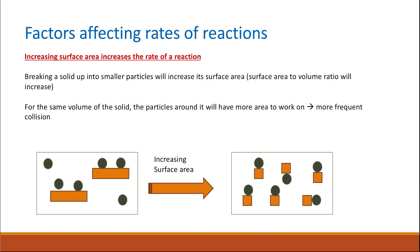As we can see here, a large particle has low surface area available for collision, so the surface area to volume ratio is smaller. But when you break down the particles into smaller ones, you increase the surface area, and there will be more effective surface area for the reacting particles to collide with, giving more frequent and more effective collisions.